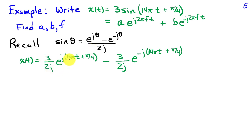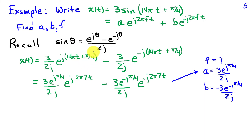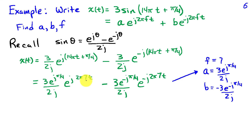Substituting the argument of the sine for theta and pulling 2j out front, we get: 3 over 2j times e to the j (14 pi t plus pi over 4), minus 3 over 2j times e to the minus j (14 pi t plus pi over 4). Using properties of exponents to pull out the phase factors, and writing 14 pi as 2 pi times 7 to identify f, we get x of t as 3 e to the j pi over 4 over 2j times e to the j 2 pi (7)t, plus 3 e to the minus j pi over 4 over 2j times e to the minus j 2 pi (7)t. Term-by-term comparison reveals f equals 7, and identifies a and b.